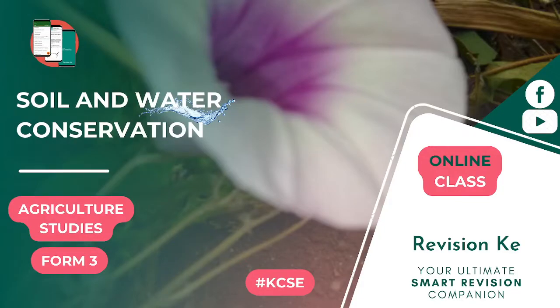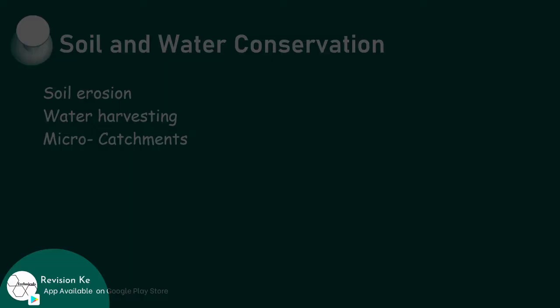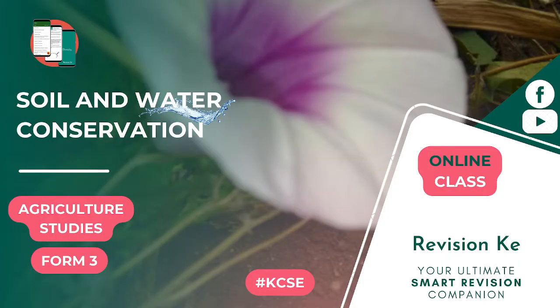Soil and water conservation is our next topic. It's a Form 3 topic in agriculture, and you should be able to get your Agriculture Studies Smart Vision app to read more on this topic. The icon is similar to that — you should be able to search it and get it easily from your Google Play Store. You can also check the description of this recorded class for the link. And so, back to our topic today: soil and water conservation.